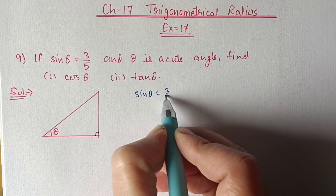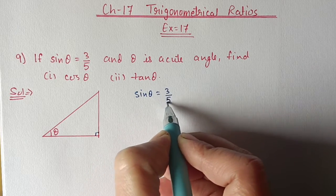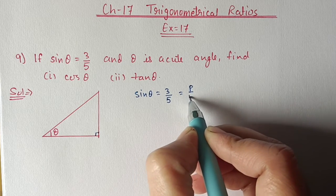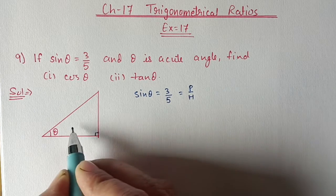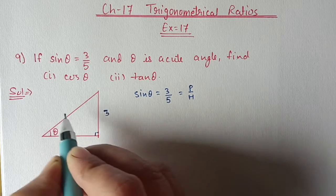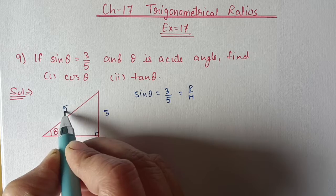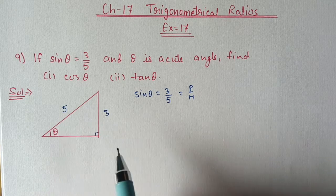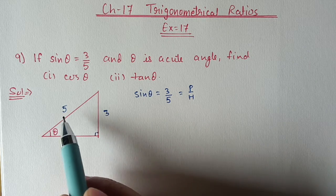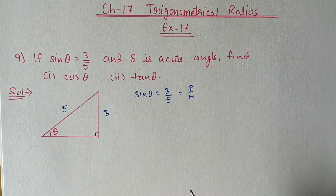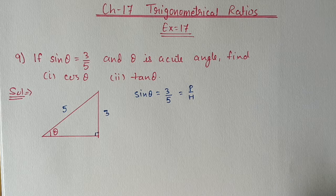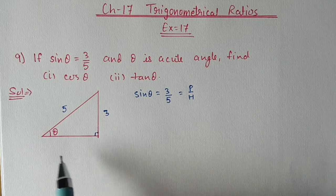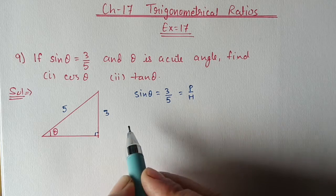sin θ is given as 3 by 5. Since sin θ is perpendicular by hypotenuse, it means perpendicular is 3 and hypotenuse is 5. You can take it as 3 and 5, or as 3x and 5x — in both ways the answer will come out the same. Now with the help of Pythagoras theorem we will find out the base.